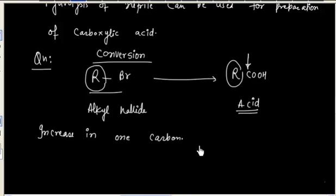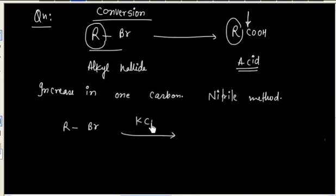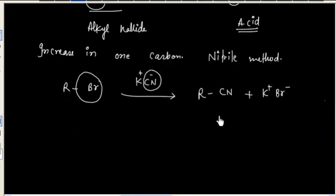Whenever there is an increase in one carbon, we can use the nitrile method. First we will treat this alkyl halide with KCN. CN- will act as a nucleophile and Br will act as a leaving group. This is simply formation of nitrile. And in the next step, we will hydrolyze, so we will have acid.